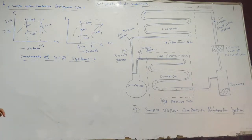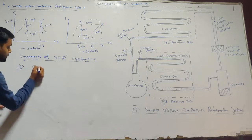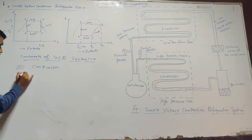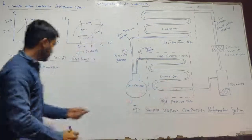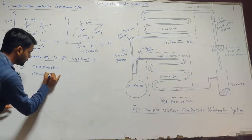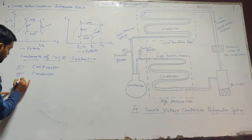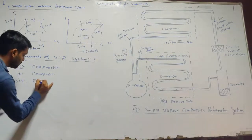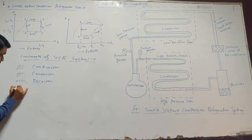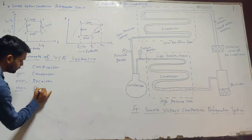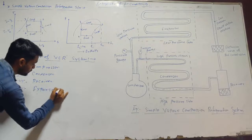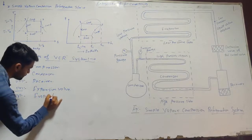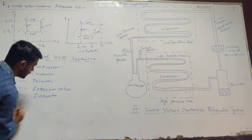The first component is the compressor. Next is the condenser. Next one is the receiver. Next is the expansion valve. And the last one is the evaporator.